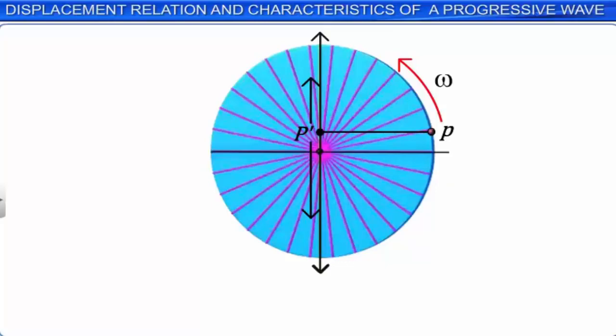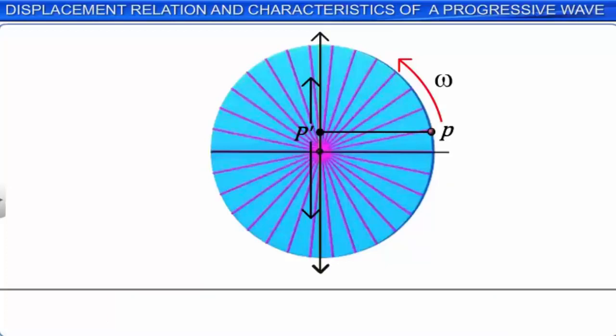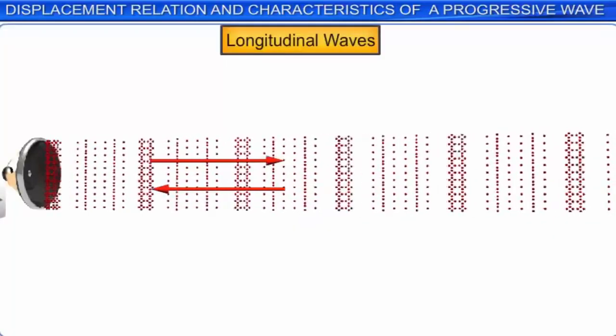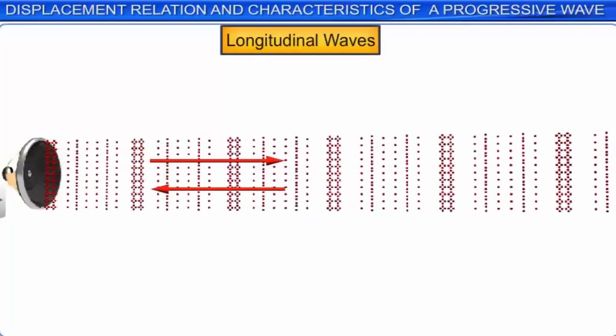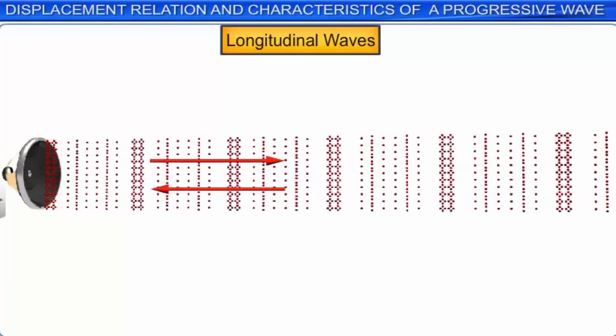In longitudinal waves, the particles are displaced in the direction of motion of the wave. The displacement equation is written as s(x, t) = a sin(kx − ωt + φ), where s(x, t) represents the displacement of the particle in the direction of propagation of the wave at position x and time t.